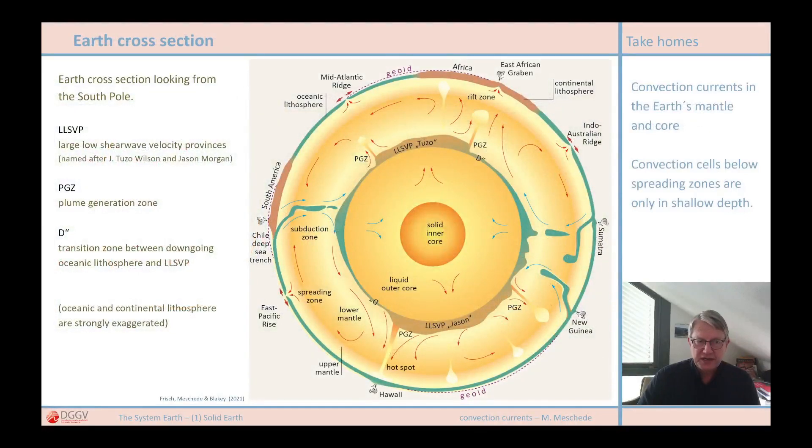This is a cross-section through the Earth's body. Here we see a section parallel to the equator, so we are essentially looking at this from the South Pole. This is a model of the Earth's body based on the latest scientific findings, and here I will just show how the currents flow in the Earth's mantle. In a later video, I will explain more on this figure. For instance, the meaning of the zones shown here, such as the Tuzo and Jason bulges and the subduction zones.